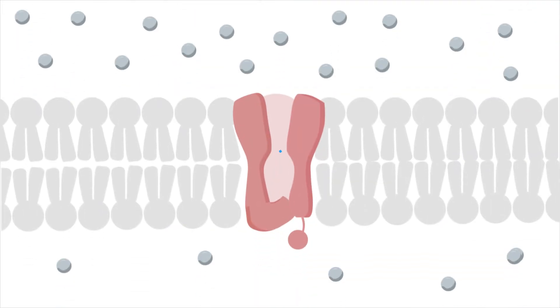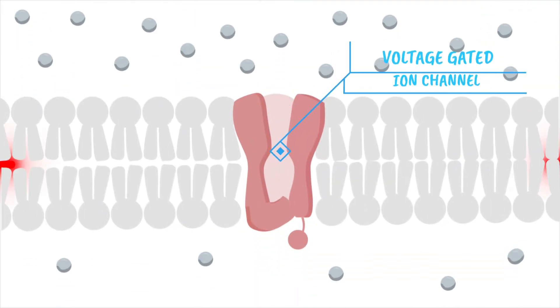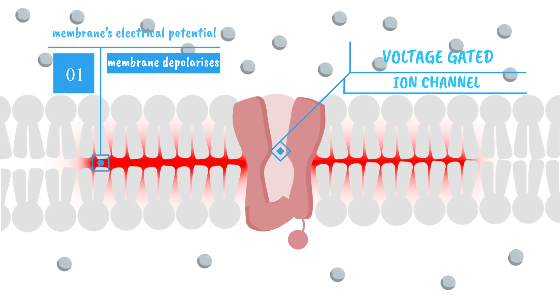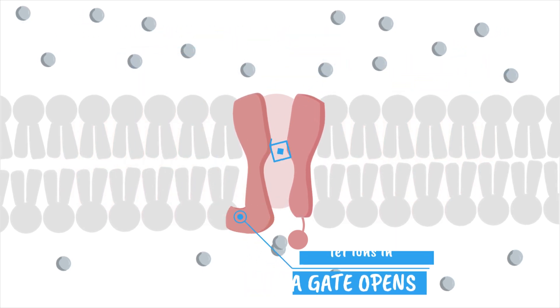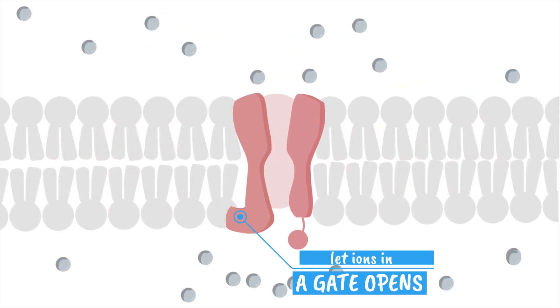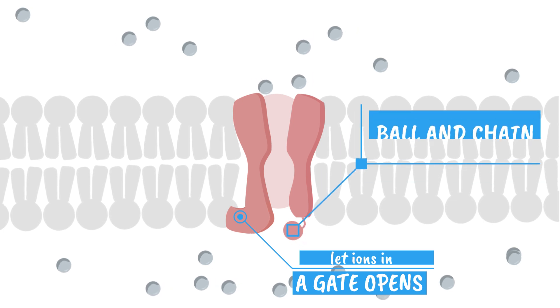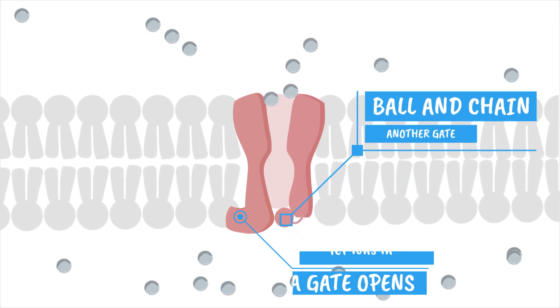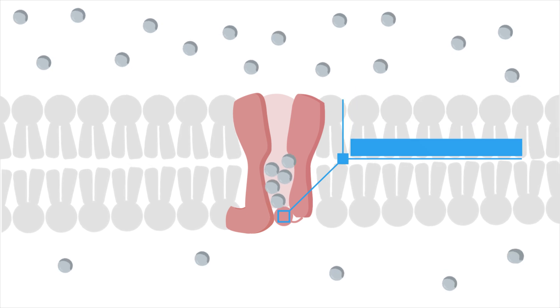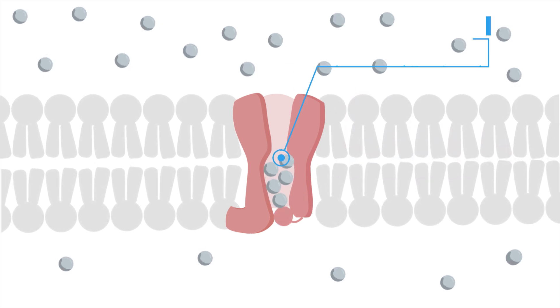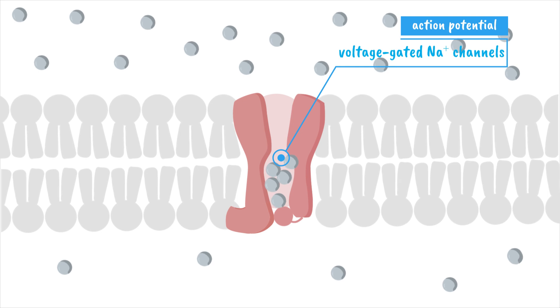Next are voltage-gated channels, which respond to changes in the membrane's electrical potential. When the membrane depolarizes, a gate opens quickly to let ions in. A moment later, another gate, often referred to as the ball and chain, swings shut to stop the flow. This rapid open and close system is essential in nerve signaling, like with voltage-gated sodium channels during action potentials.